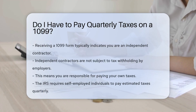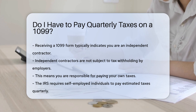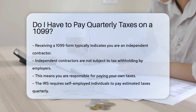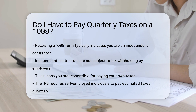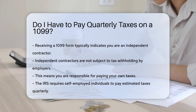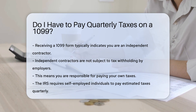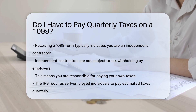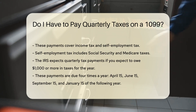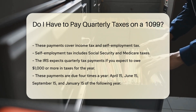Receiving a 1099 form typically indicates you are an independent contractor. Independent contractors are not subject to tax withholding by employers. This means you are responsible for paying your own taxes. The IRS requires self-employed individuals to pay estimated taxes quarterly. These payments cover income tax and self-employment tax, which includes Social Security and Medicare taxes.